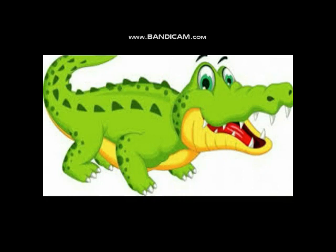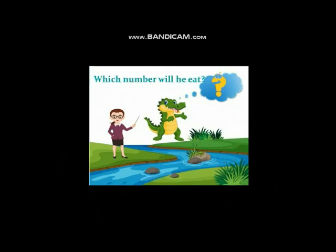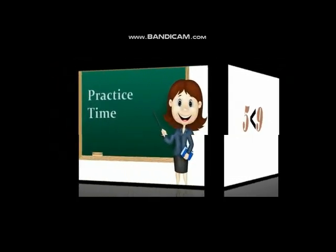Children, by now you must have understood — I always open my mouth towards the greater number. When my mouth is towards the left, it is the greater-than sign. When towards the right, it is the less-than sign. Now children, it is your turn to guess: which number will Charlie eat — number five or nine? Yes, he will eat number nine, because that is the greater number.